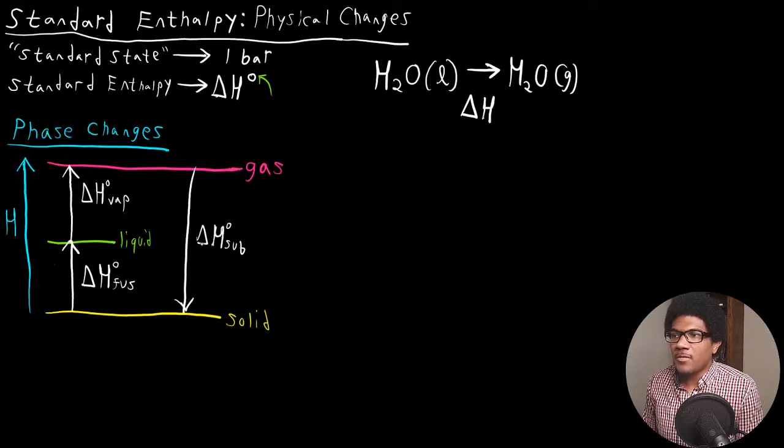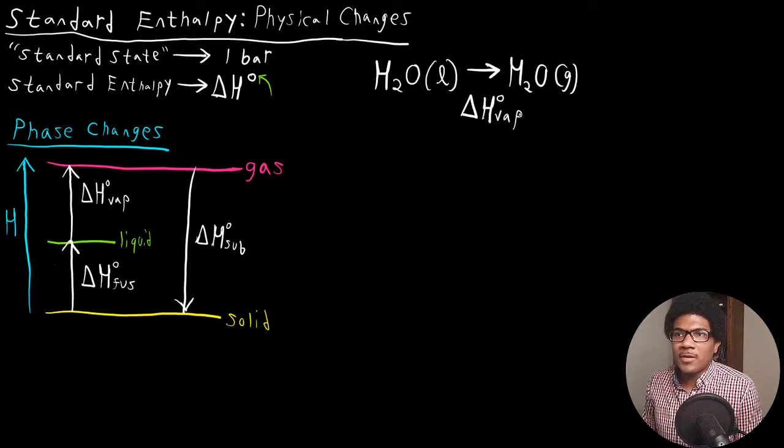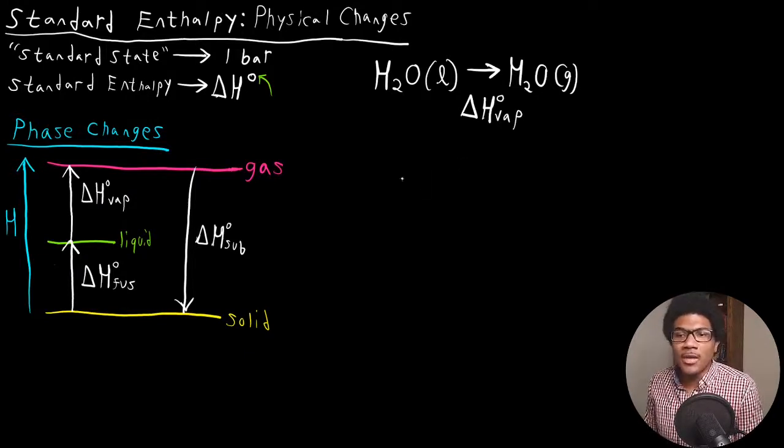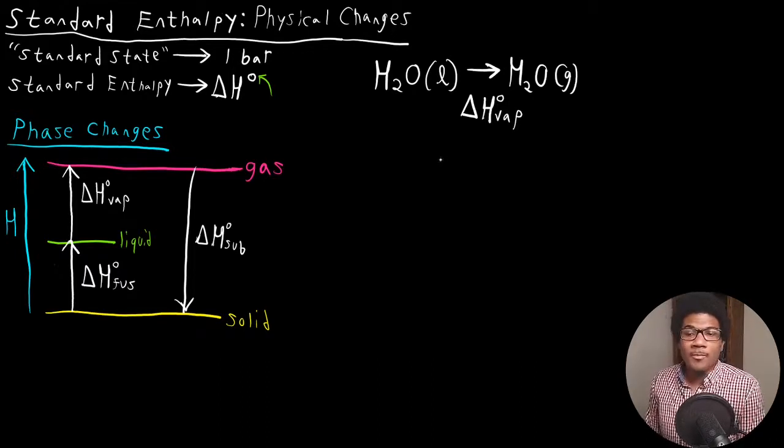All of these different phase changes will have different enthalpy changes associated with them. Going back to our example here, this standard enthalpy would be the standard enthalpy of vaporization for liquid water. These are always denoted as such in tables in the back of your textbook, or you can look online and find standard tables with these values tabulated that are determined experimentally.